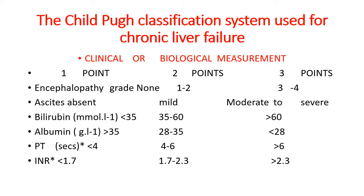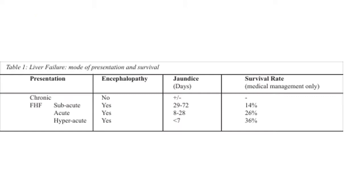The Child-Pugh classification system is used for chronic liver failure, scoring encephalopathy, ascites, bilirubin, albumin, and prothrombin time. And of course, liver failure modes of presentation and survival — showing encephalopathy presentation and survival rate.